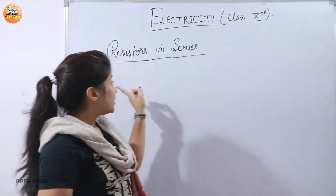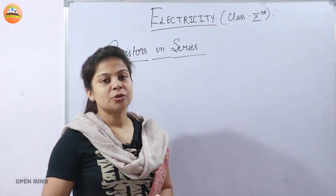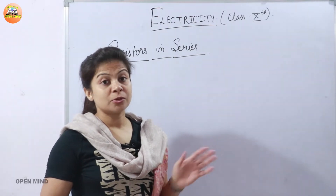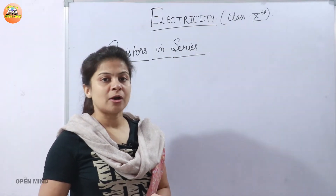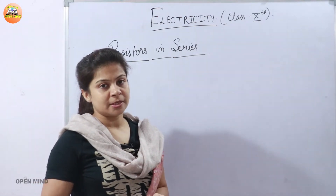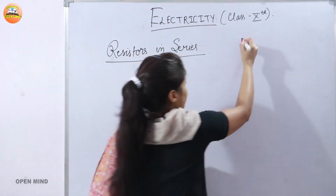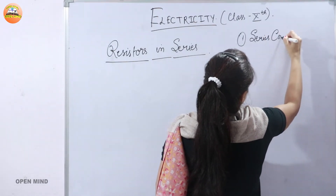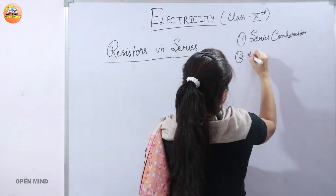The new topic is resistors in series. Resistors are those substances which obstruct or block the flow of current. We can arrange resistors in two ways in a circuit: the first is the series combination and the second is the parallel combination.